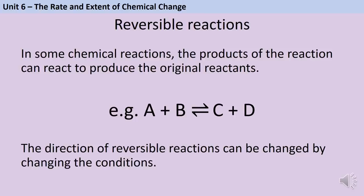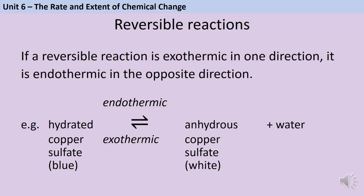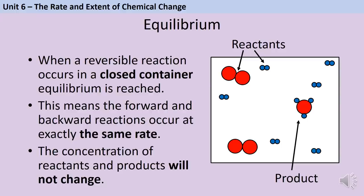In some reactions the products can react to re-form the original reactants — these are reversible reactions, shown with a double-headed arrow. You can change the direction by changing the conditions. If a reversible reaction is exothermic in one direction, it is endothermic in the opposite direction. For example, heating blue hydrated copper sulfate produces white anhydrous copper sulfate (endothermic). Adding water to anhydrous copper sulfate reforms the blue hydrated form (exothermic).